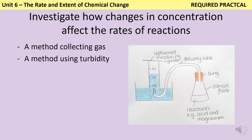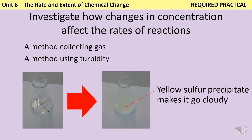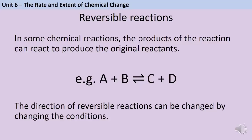As with all investigations, keep other variables controlled to make the experiment valid — control the volume of solutions and the mass of solid added. For the second part, you measure a reaction that becomes turbid (cloudy), typically hydrochloric acid with sodium thiosulfate, where a solid precipitate forms. The classic method is timing how long a cross drawn on paper takes to disappear — the faster it disappears, the higher the rate. This is subjective, so a light sensor connected to a computer would give a more reliable measurement.